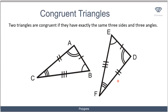Two triangles are congruent if they have exactly the same three sides and three angles. For example, triangle ABC and triangle EDF — we can see that corresponding sides are equal using the tick marks, and corresponding angles are also equal. So these two triangles are congruent.